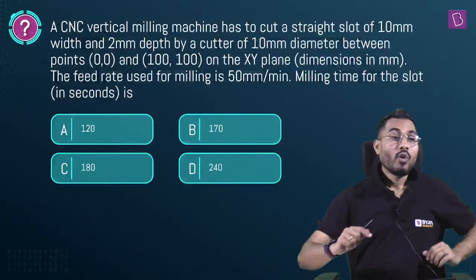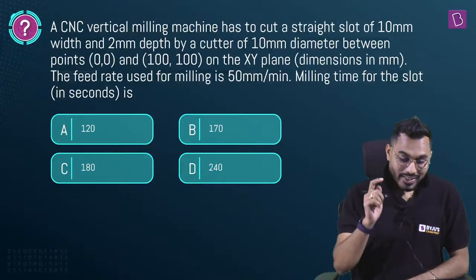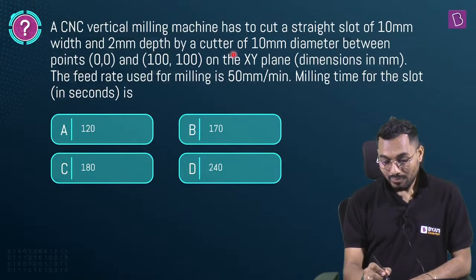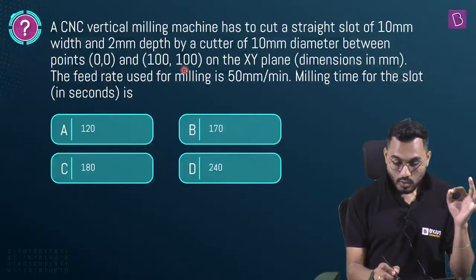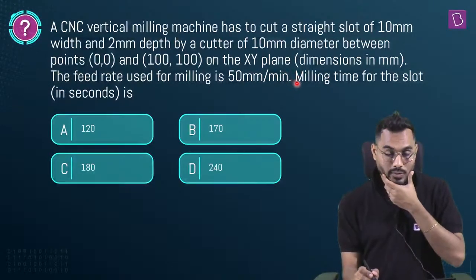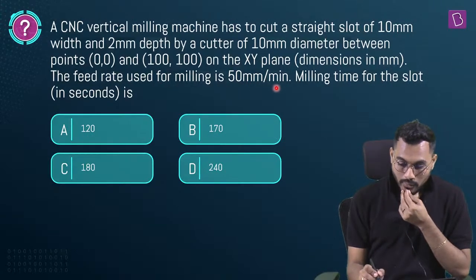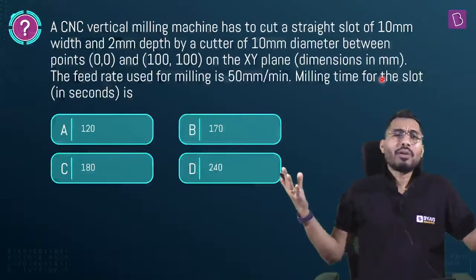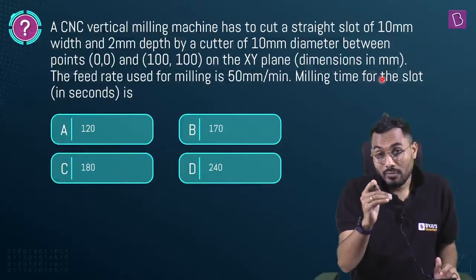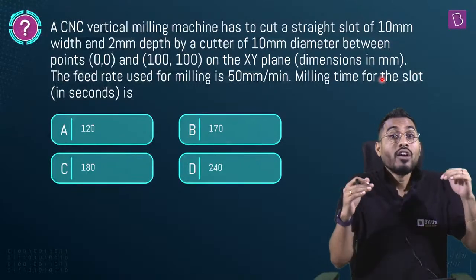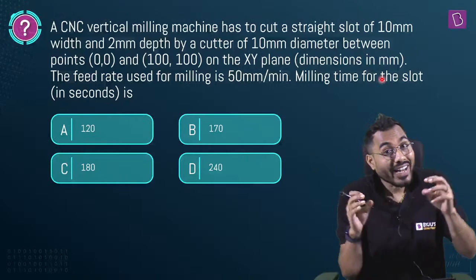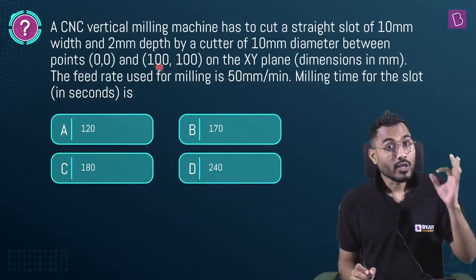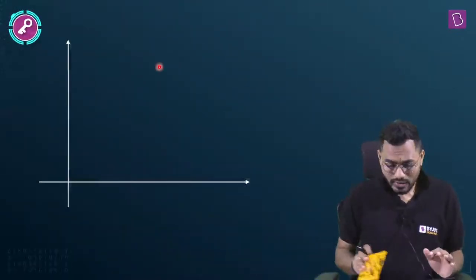A CNC vertical milling machine cuts a straight slot of 10 mm width and 2 mm depth using a cutter of 10 mm diameter between points (0,0) and (100,100) on the XY plane. Feed rate = 50 mm/min. What is the milling time? Time = distance ÷ feed rate. The actual travel distance is not simply 100 mm.